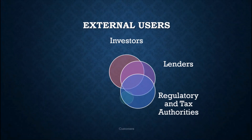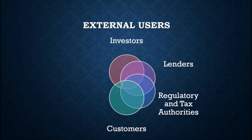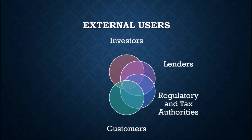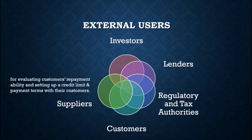Next are customers. Customers are buyers of goods or services and may exist at any stage of the business cycle. They may be producers, manufacturers, and retailers. They use financial information for assessing the financial position of their suppliers, which is essential to maintain a stable source of supply. Next are suppliers. Suppliers are the sellers of goods and services. They use financial information for inspecting the credibility of customers by evaluating their repayment ability and setting up credit limits and payment terms.